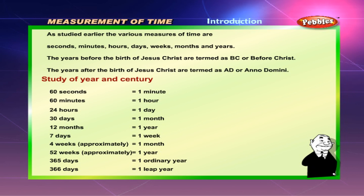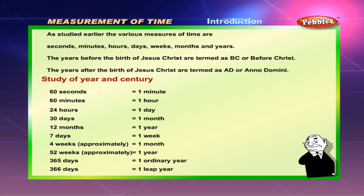The years before the birth of Jesus Christ are termed as BC, or Before Christ. The years after the birth of Jesus Christ are termed as AD, or Anno Domini.